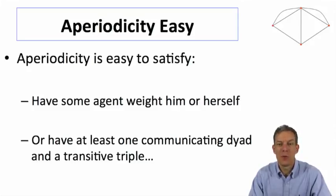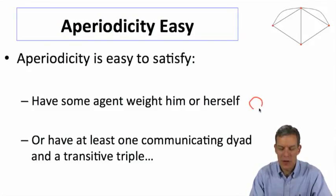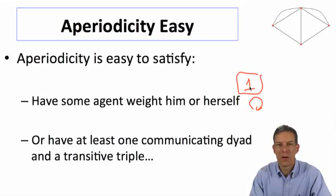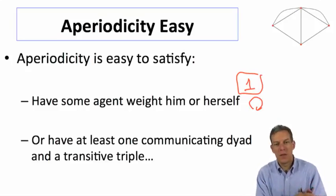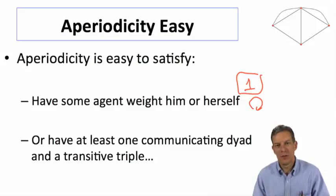So as long as you just had one person rate him or herself, so if anybody puts weight on themselves, then you've automatically got a cycle of length one, and once you have a cycle of length one, then the greatest common divisor of all the cycles has to be one, right? So as long as we've got strongly connected aperiodicity, as long as anybody's putting weight on themselves, you're done.